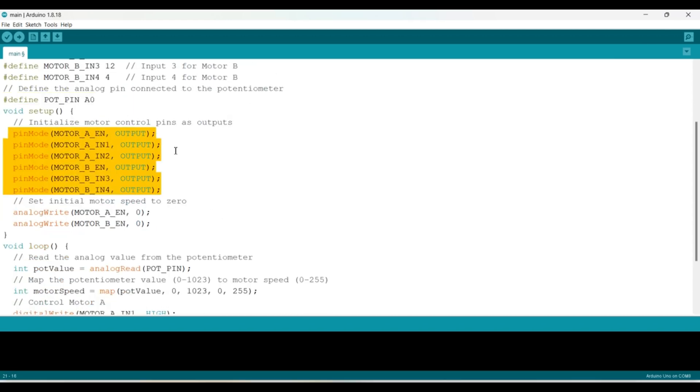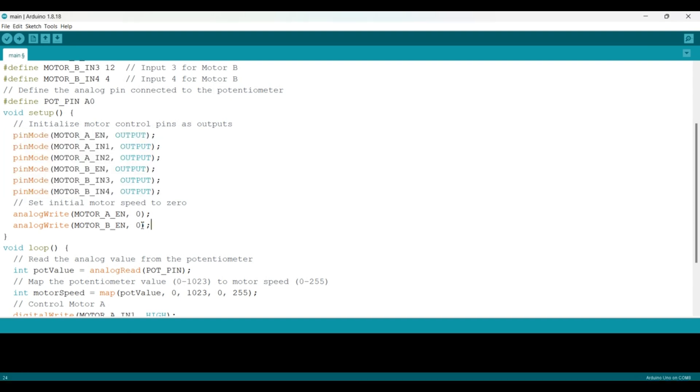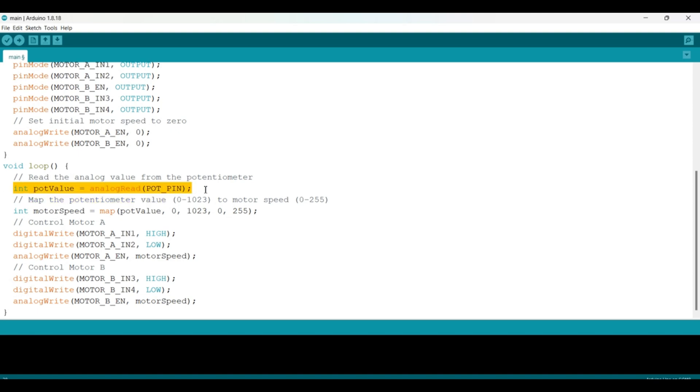In the void setup part we have set all the pins as our output. Here we have set initial motor speed to 0 then moving towards the loop part. This code is used to read the value from potentiometer. This line is used to map the potentiometer value.